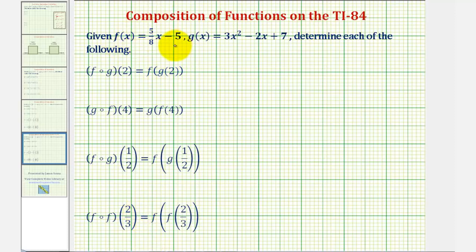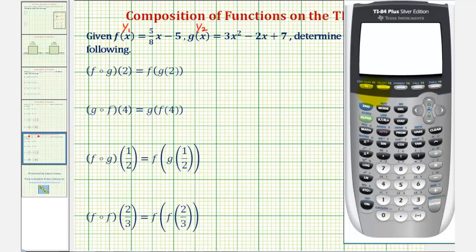We'll begin by entering f of x on the calculator as y sub one, and g of x as y sub two. It's important that we know which function is which. So we'll press y equals, and y sub one is going to be five eighths, which I'll put in parentheses, times x minus five, enter.